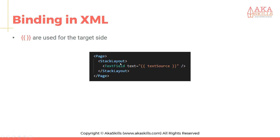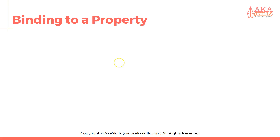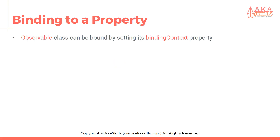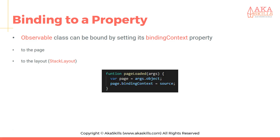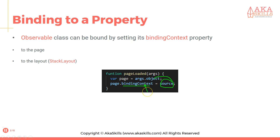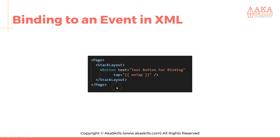textSource is the name of the variable we're going to access to achieve this binding. We can also bind to a property — an Observable class can be bound by setting its bindingContext property to the page or to a layout like StackLayout. For example, in a pageLoaded function receiving arguments, we set page equal to args.object and bind the source to its bindingContext property.